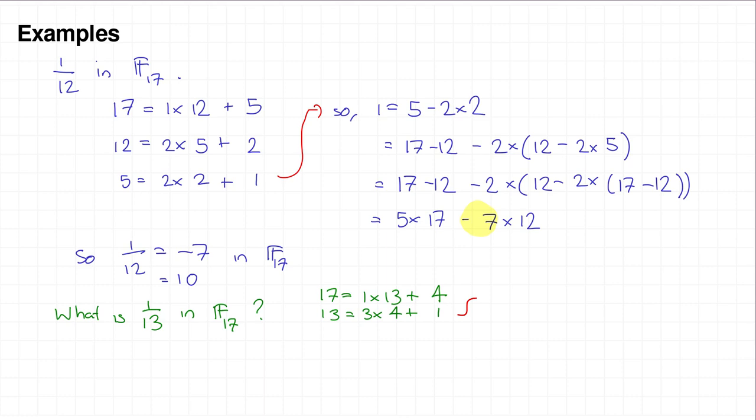So we're then going to rearrange to get 1 as a multiple of 17 and 13. So what do we do? Well, we have 1 is 13 minus 3 times 4. And that's 13 minus 3 times (17 minus 13). So that is... Collect the 13s. You've got 4 times 13 minus 3 times 17. Okay, again, you can check that that's correct. And it gives us straight away the multiplicative inverse of 13 in the finite field F_17. It's going to be 4. So 1 over 13 is equal to 4 in F_17.